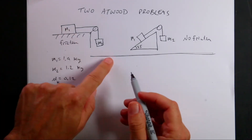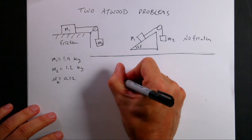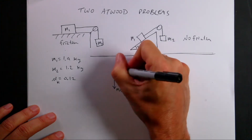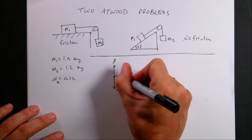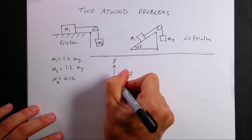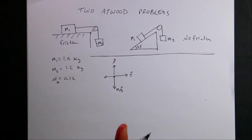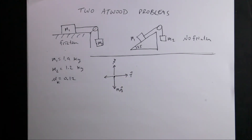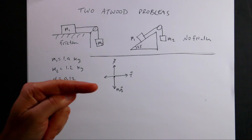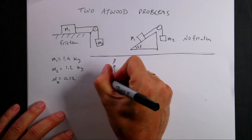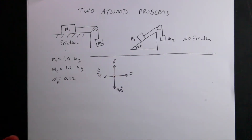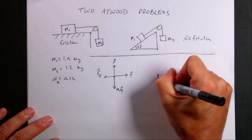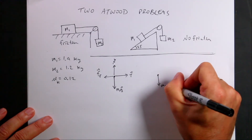The first thing to do is draw the two free-body diagrams for the two objects. For mass 1, I have the downward gravitational force M1g, the upward normal force N from the table, tension T pulling toward the pulley, and a backwards frictional force. I've assumed it's sliding that way — the frictional force always opposes the sliding, not the acceleration. For mass 2, I have M2g downward and tension T upward.